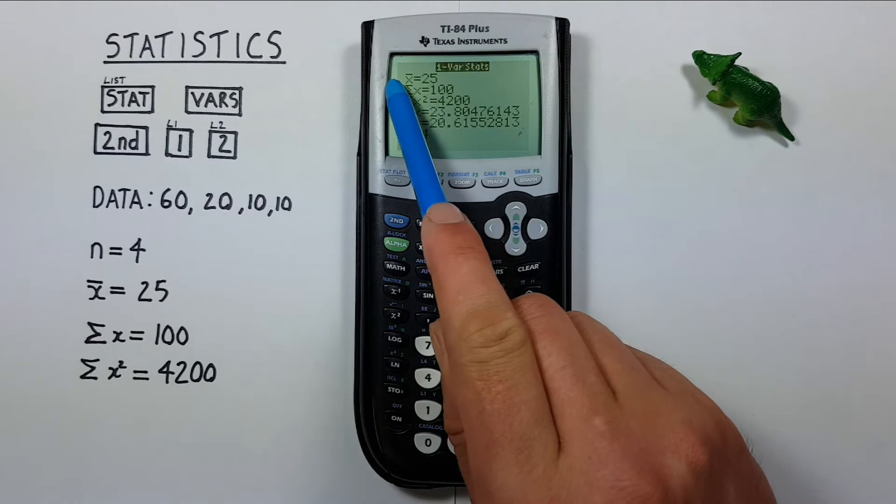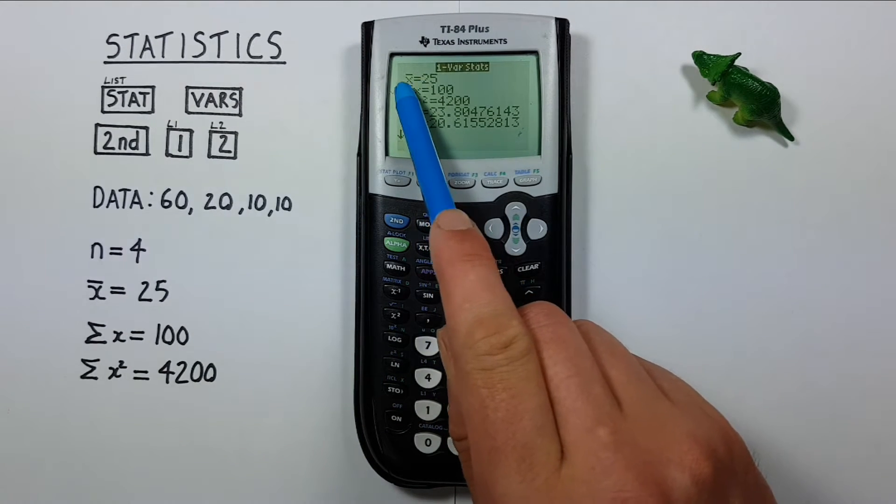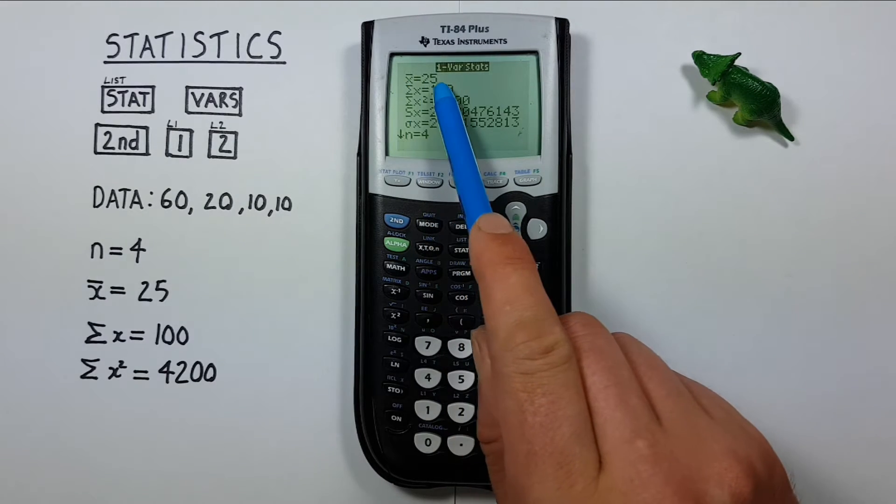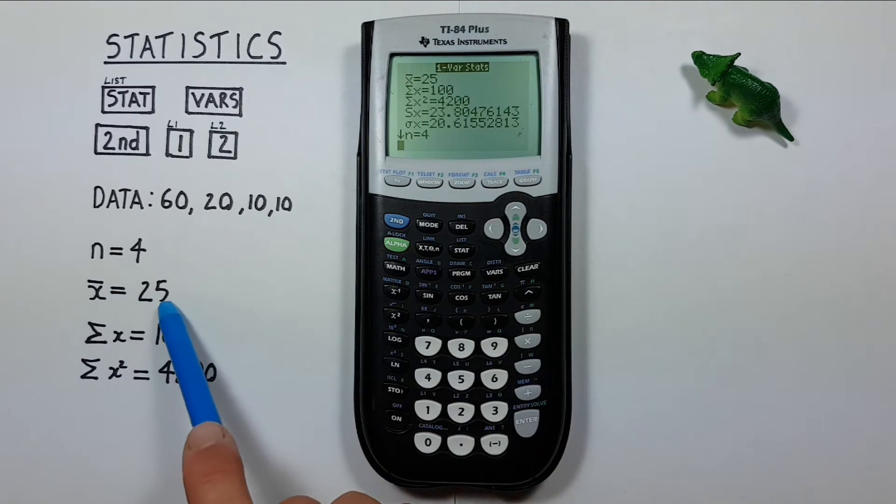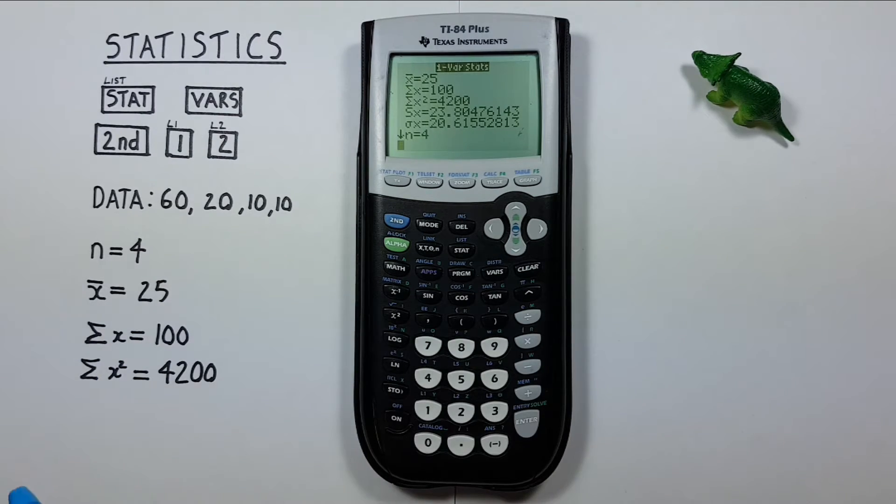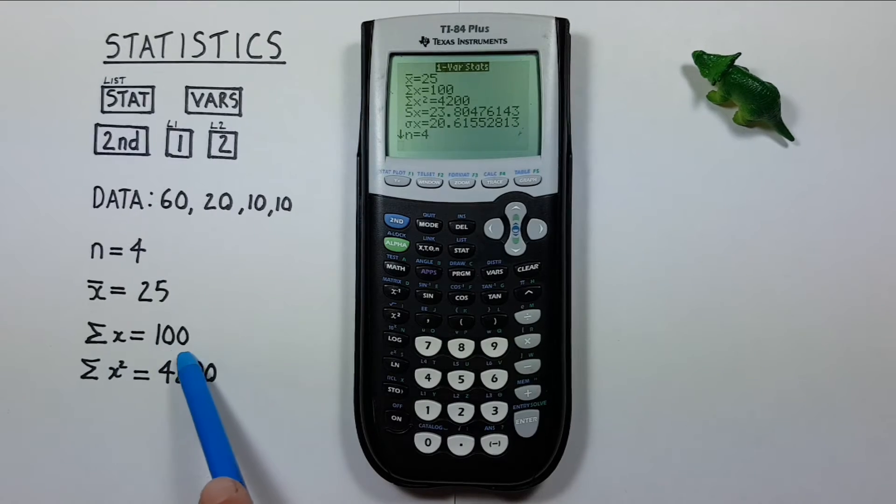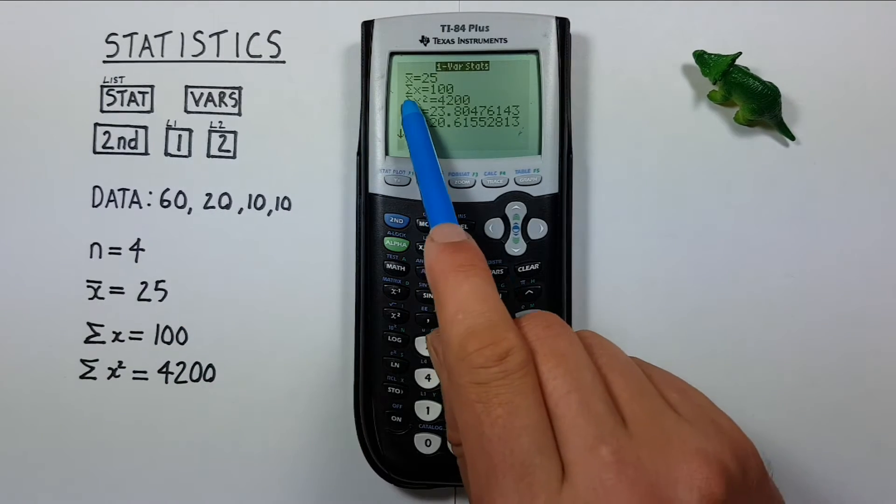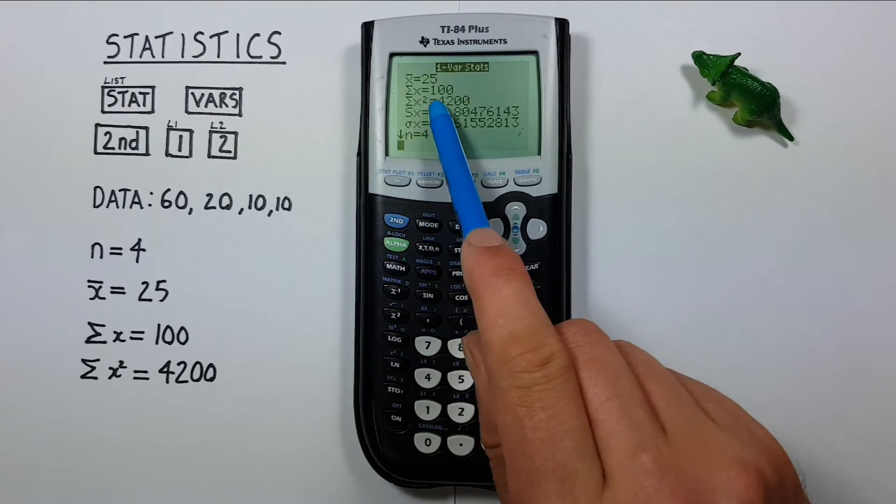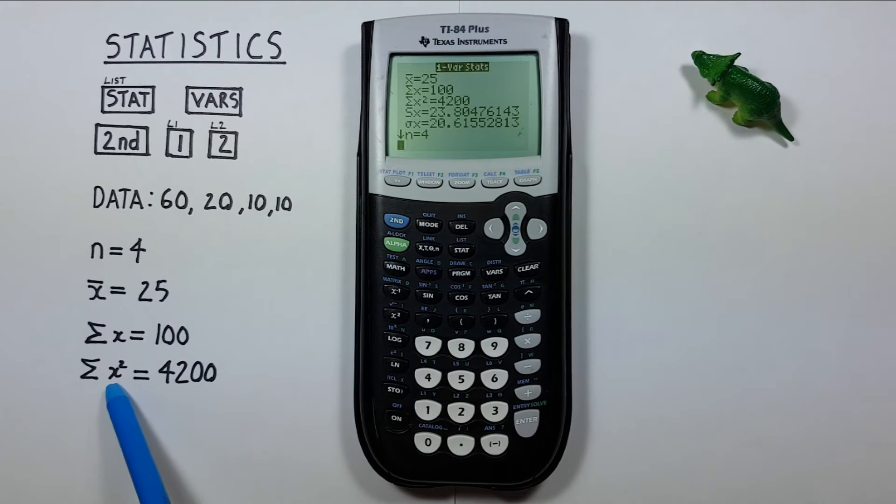And it gives us a result. First we have x̄ or the mean which is 25, which is correct. Next we have the sum which is equal to 100. Yep. The sum of squares which is equal to 4200. Yeah there we go.